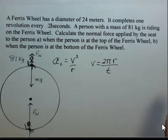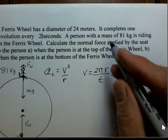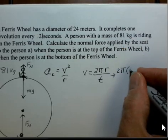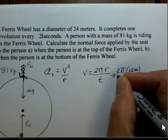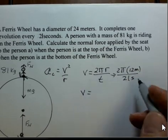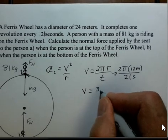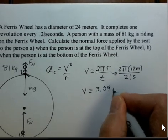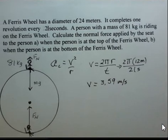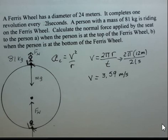So if we put in these numbers, 2π, the diameter is 24 meters, so the radius is 12 meters, and 21 seconds. You should do this calculation on your own, but hopefully you'll come up with 3.59 meters per second. That's the speed of going around the circle. The velocity is tangent to the circle in uniform circular motion, but we really just need the speed here.